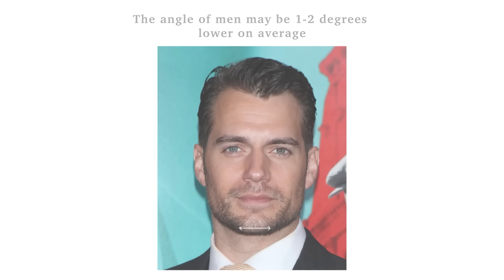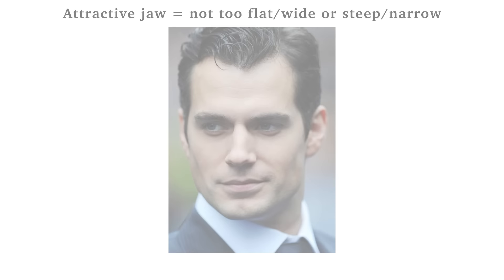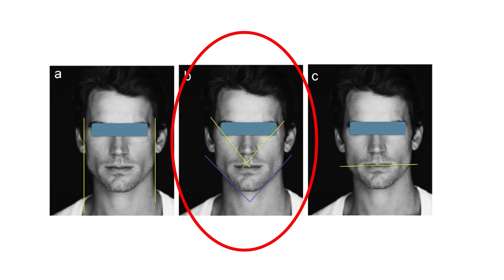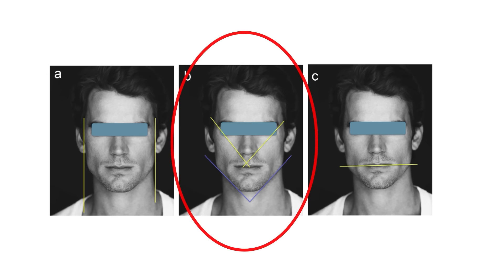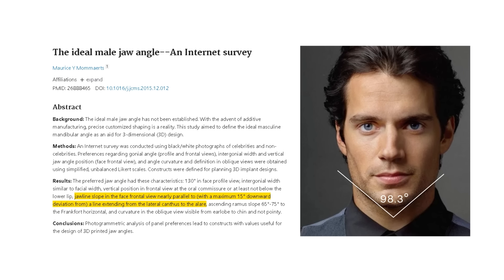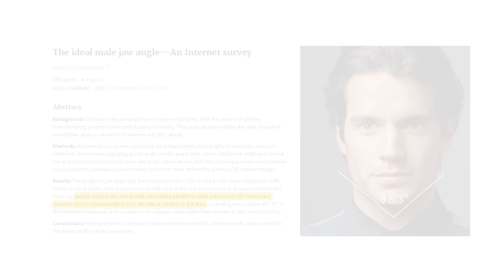Most attractive men and women have a jawline in frontal view that does not appear too flat or too inclined and narrow. In Henry's case his jaw is a bit on the flatter side but still very reasonably attractive. A cephalometric assessment comparing this measurement to the angle between the alare and the lateral canthus shows these two angles should be within 15 degrees of one another. Henry is about 9 degrees off from the nose base, so he's not doing too badly, though compared to the ala or nose wing he falls slightly outside the ideal range.